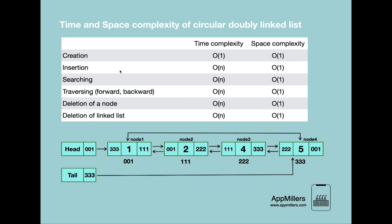The next operation is insertion. The time complexity is O(n) because if you want to insert a node in the middle of the linked list, we have to traverse through it, which takes O(n) time. The space complexity is O(1) because we just use a temporary variable inside the loop, which takes constant space.